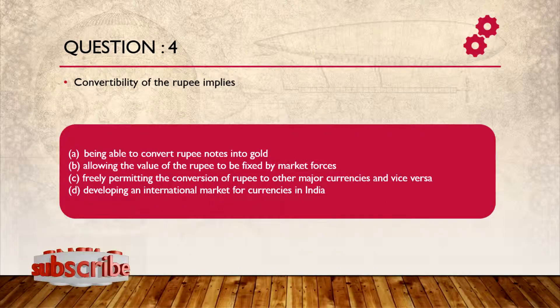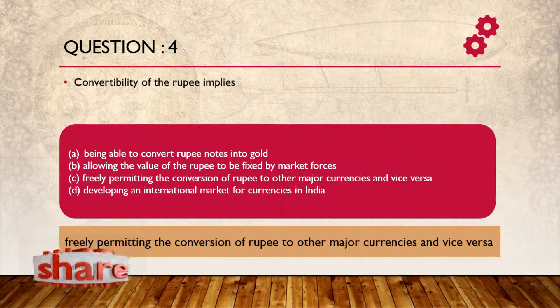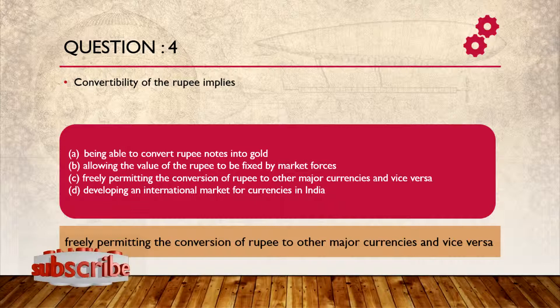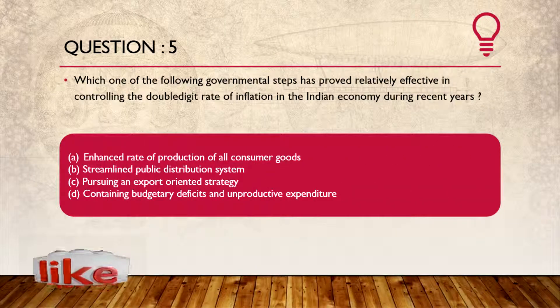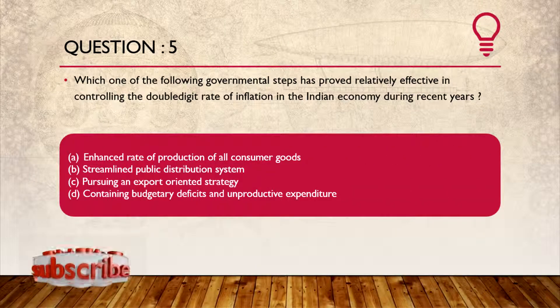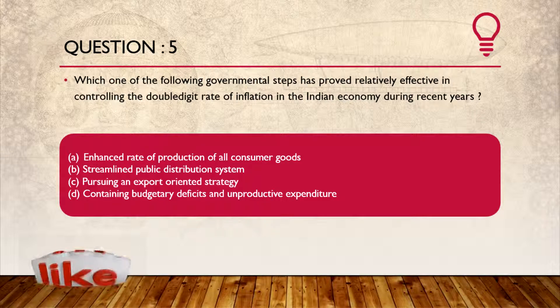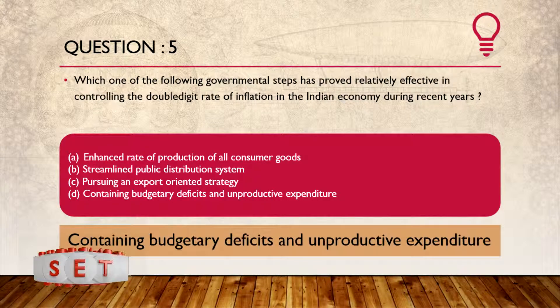Question number 4: Convertibility of the Rupee implies freely permitting the conversion of Rupee to other major currencies and vice versa. Question number 5: The following government steps were relatively effective in controlling the double digit rate of inflation and economic volatility.